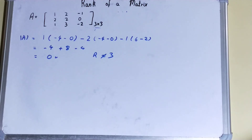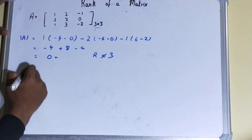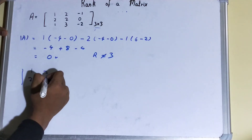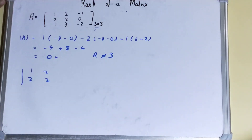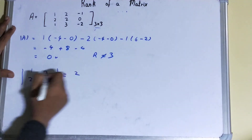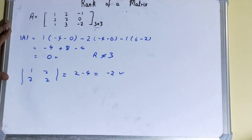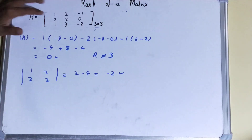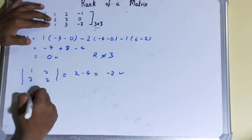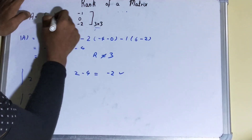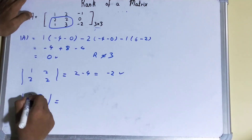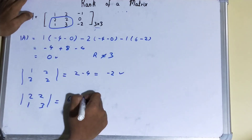Let's pick the submatrix [1, 2; 2, 2] and find its determinant: 1×2 minus 2×2 gives minus 2, which is non-zero. We can also pick any other 2×2 submatrix — for example [2, 1; 2, 3] — it is not compulsory to pick from a particular area.